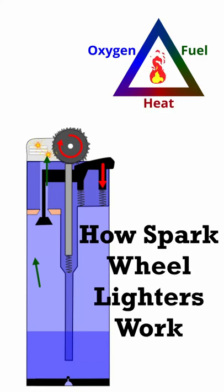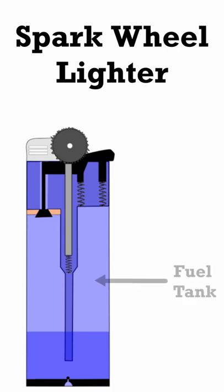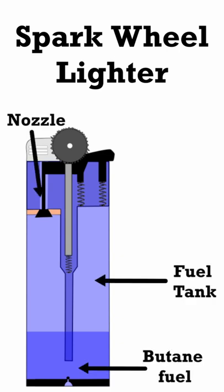This is one of the most common types of lighters, seen in many makes and models around the world. The lighter contains a section to store the fuel, which in this case is butane, and a nozzle to release it into the air.